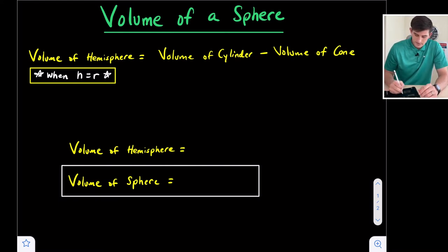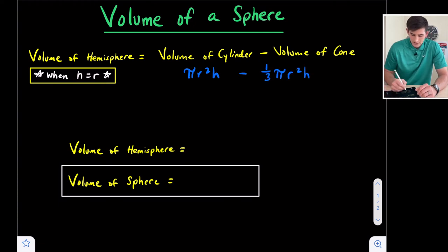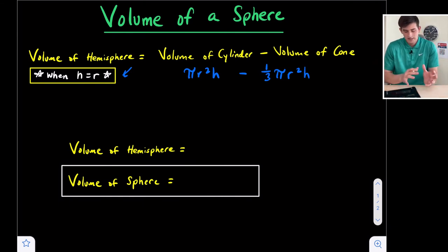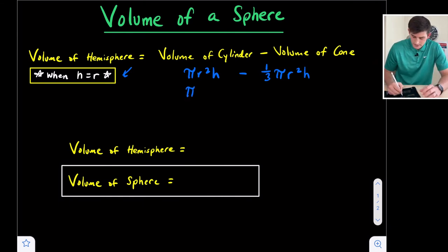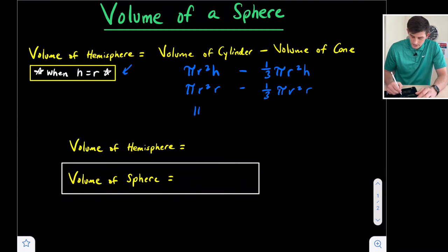Our formula for volume of a cylinder is pi r squared times height, and for the volume of a cone, we have one third pi r squared times height. Our note here tells us that the height is the same as the radius. So we could write this as pi r squared times r, and one third pi r squared times r. We have r squared times r, so our exponent rule tells us we can add the exponents together. This gives us pi r cubed minus one third pi r cubed.